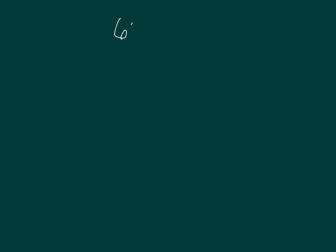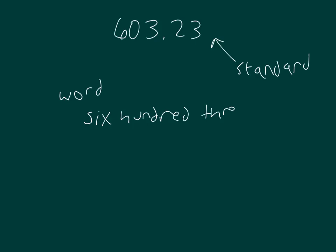So we were given different ways to write numbers. For instance, this one here was in standard form. We'll talk about it in word form so we can say what this number is: 603 and 23 hundredths. We were also given and shown ways to write this out in expanded notation.